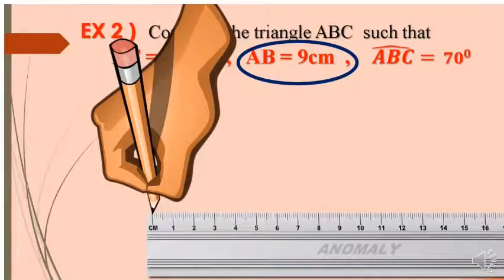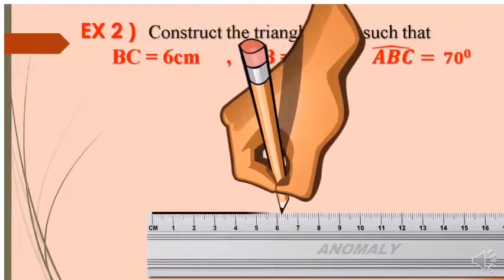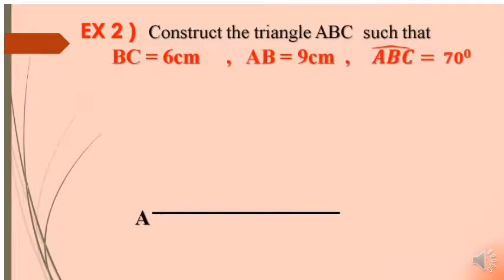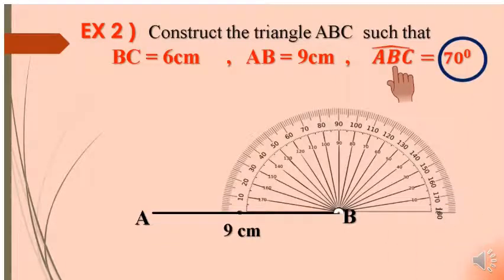Using the ruler, we draw AB equal to 9 cm. Then, this side, then angle. We have to draw angle ABC at vertex B. Using the protractor, put it on B. Starting from the left, the 0 to the left, count until you reach 70 degrees.